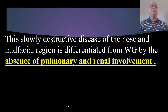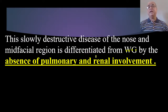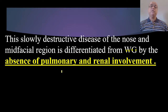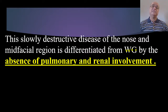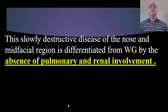This is a slowly destructive disease of the nose and mid-facial region, and it is differentiated from Wegener's granuloma by the absence of pulmonary and renal involvement. This T cell lymphoma or midline lethal granuloma involves only the nose and paranasal sinuses — it does not involve the lower respiratory tract or kidneys. In contrast, Wegener's granuloma is a multi-systemic disease involving the upper airway, lower airway, and causes generalized vasculitis leading to glomerulonephritis.